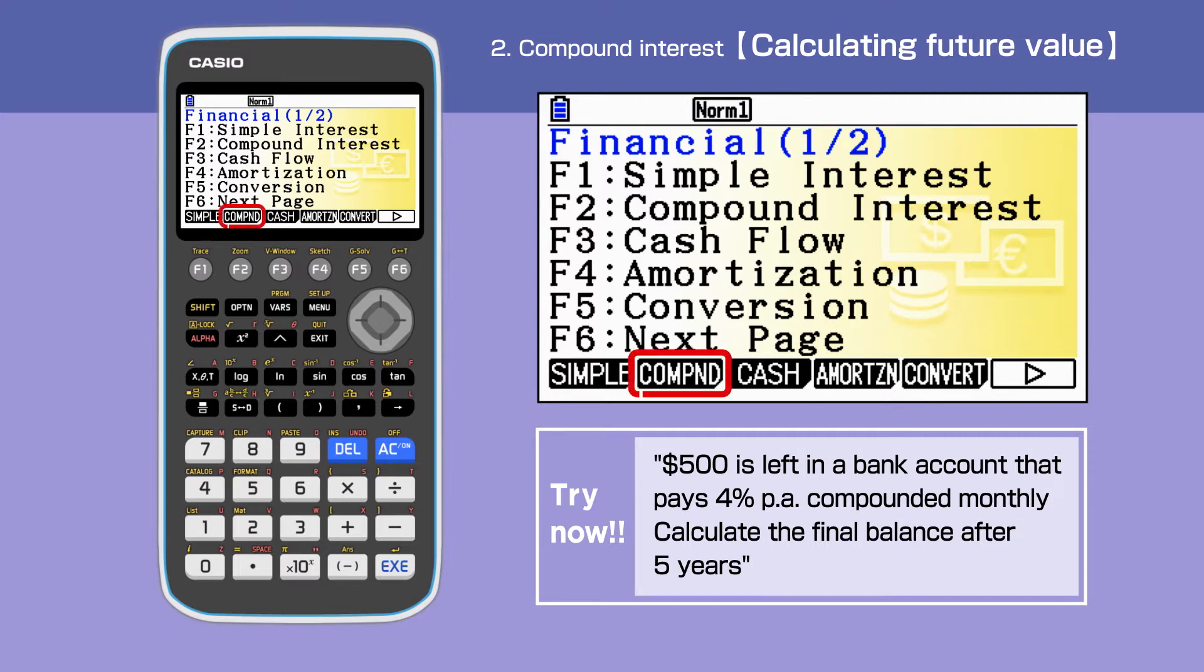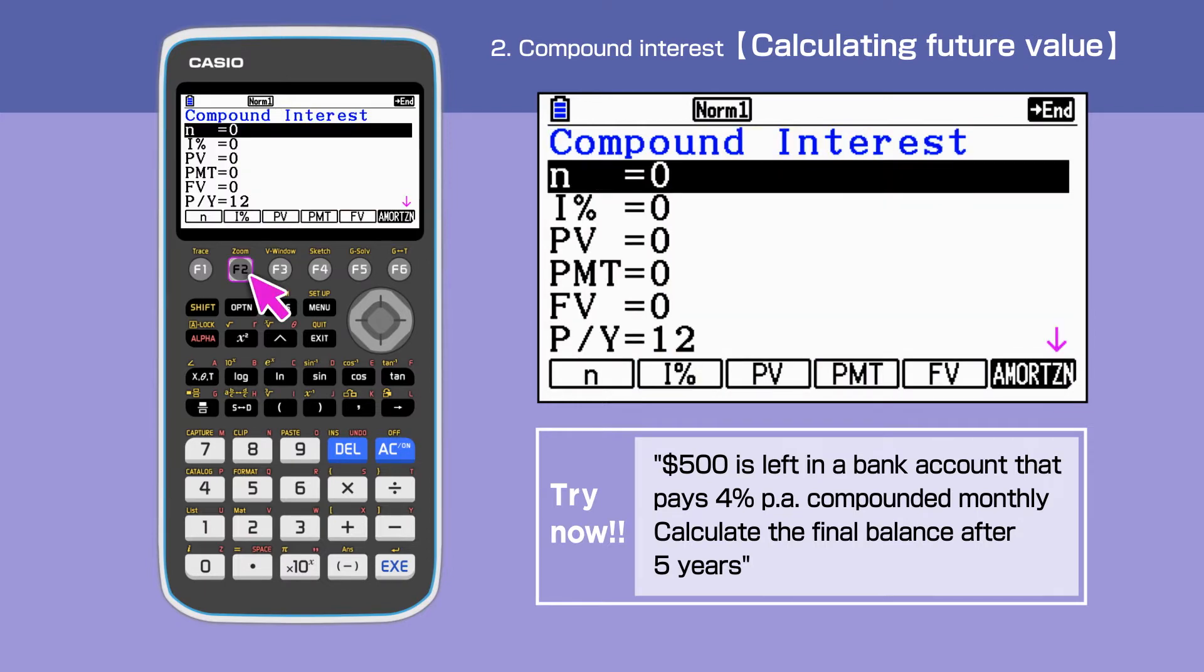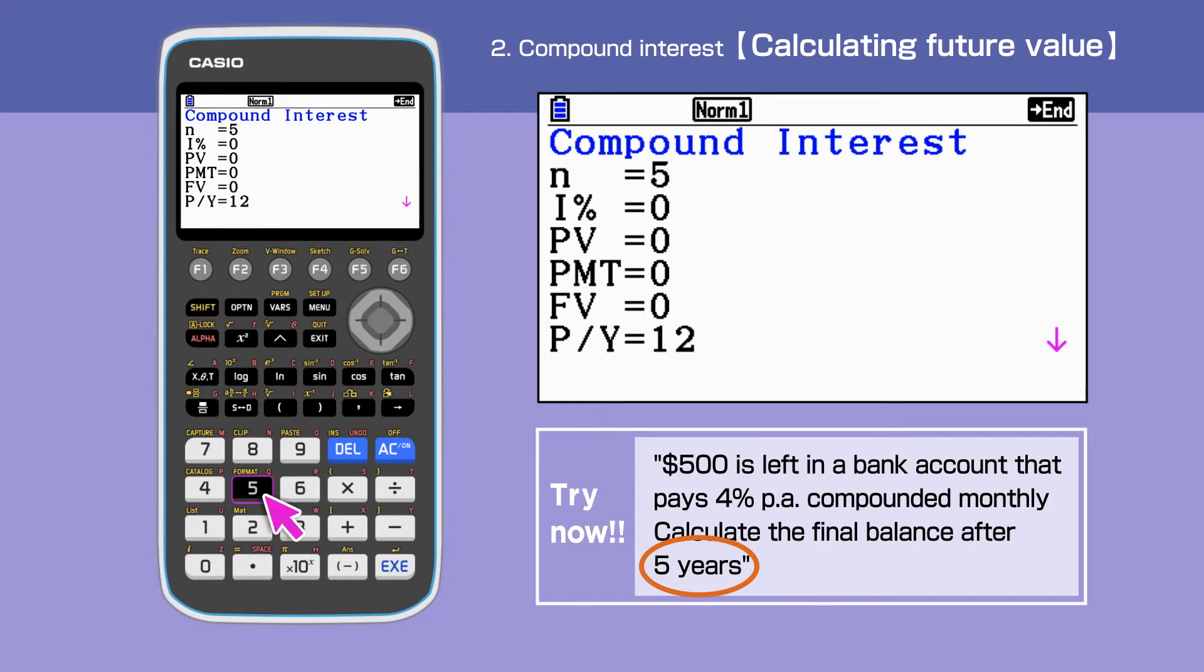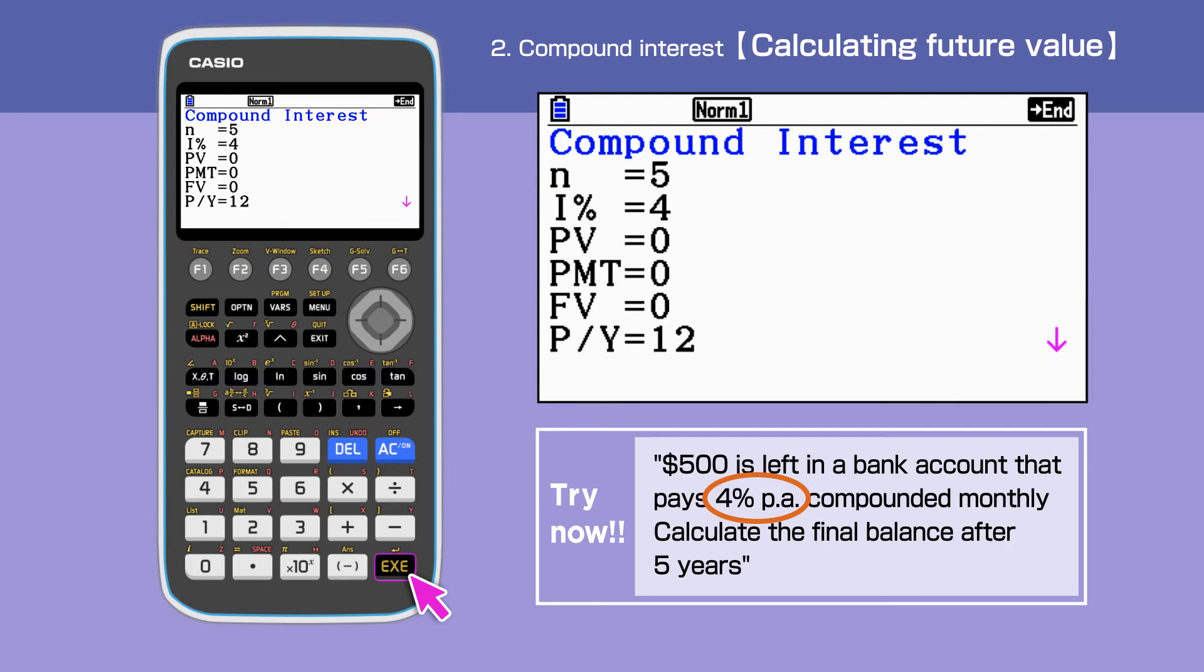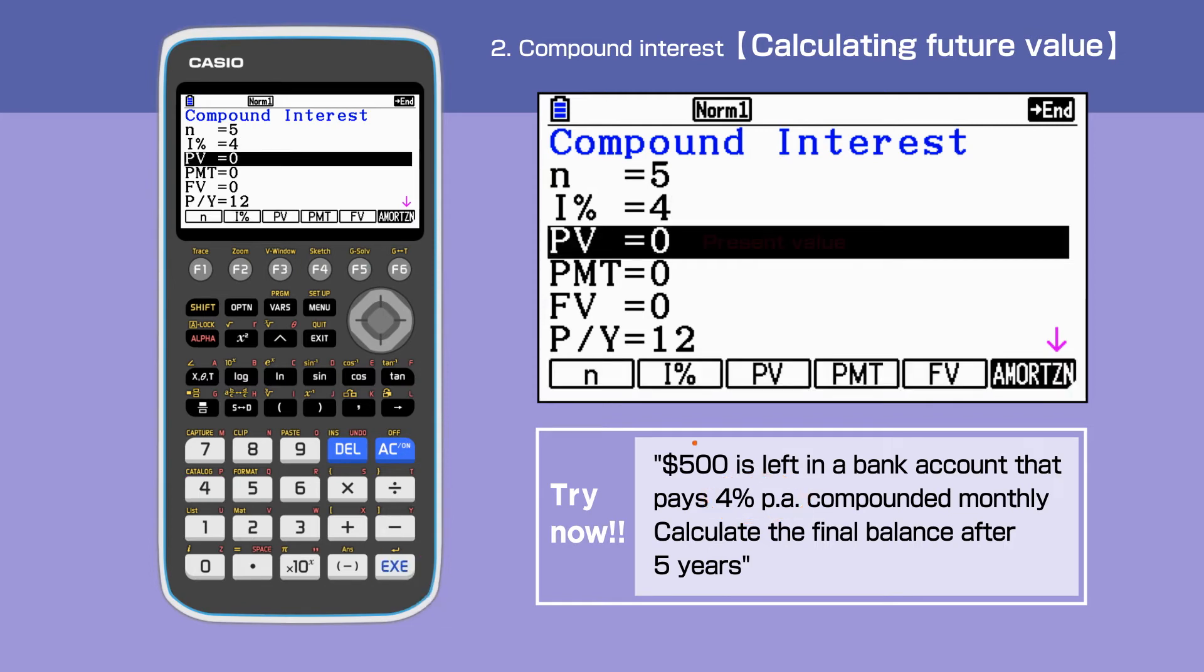Press F2 and select Compound Interest. The unit for N is year for the compound interest. We enter N equals 5, I% equals 4, and minus 500 for PV.